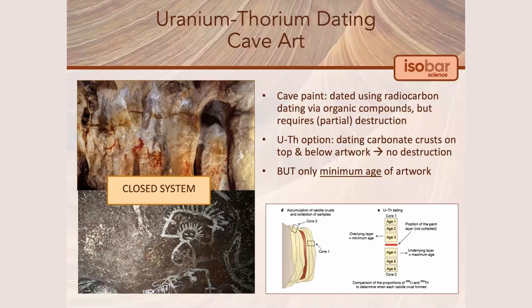The uranium-thorium dating method, on the other hand, does not require destruction of the artwork, as it relies on dating the calcium carbonate crust overlying the painting. One limitation of the method is that it would only provide a minimum age of the artwork, as the painting could have been completed immediately before the crust developed, or even thousands of years before.